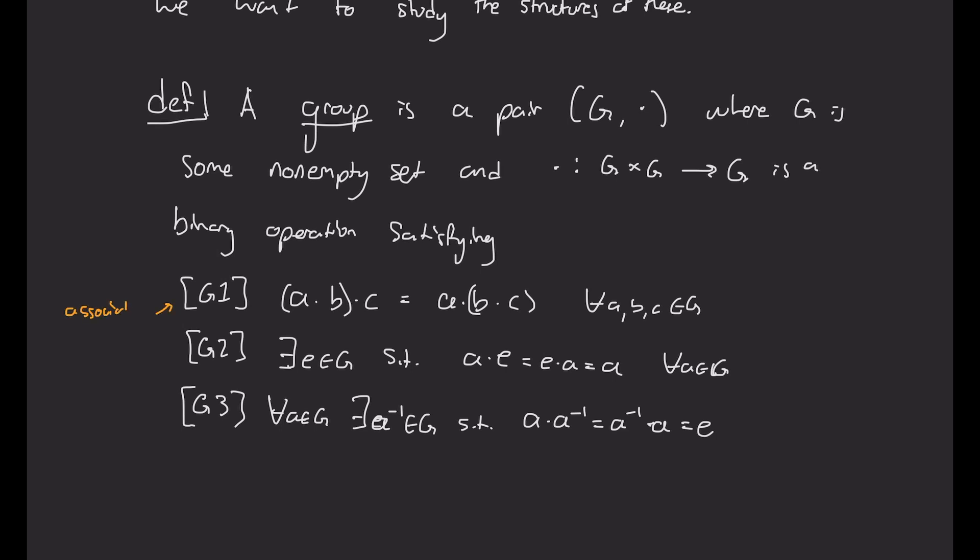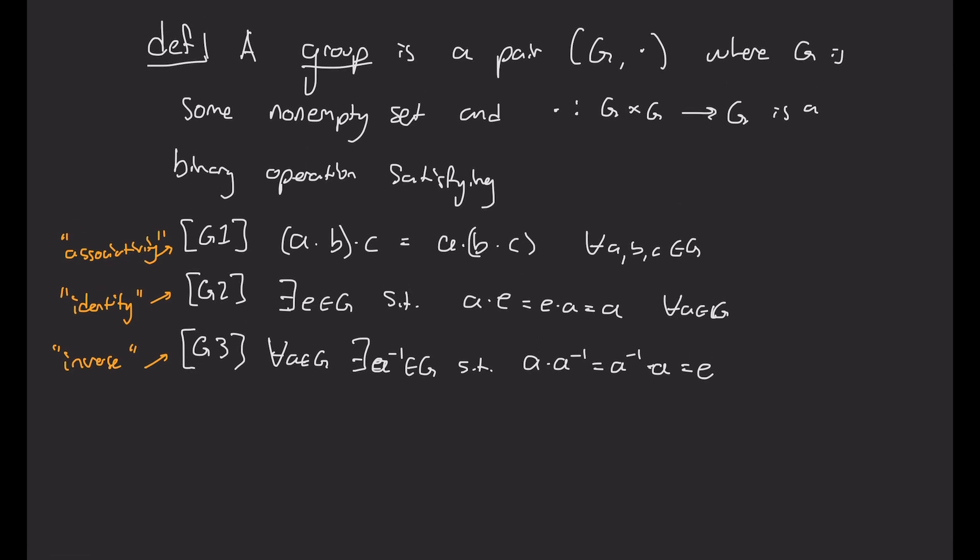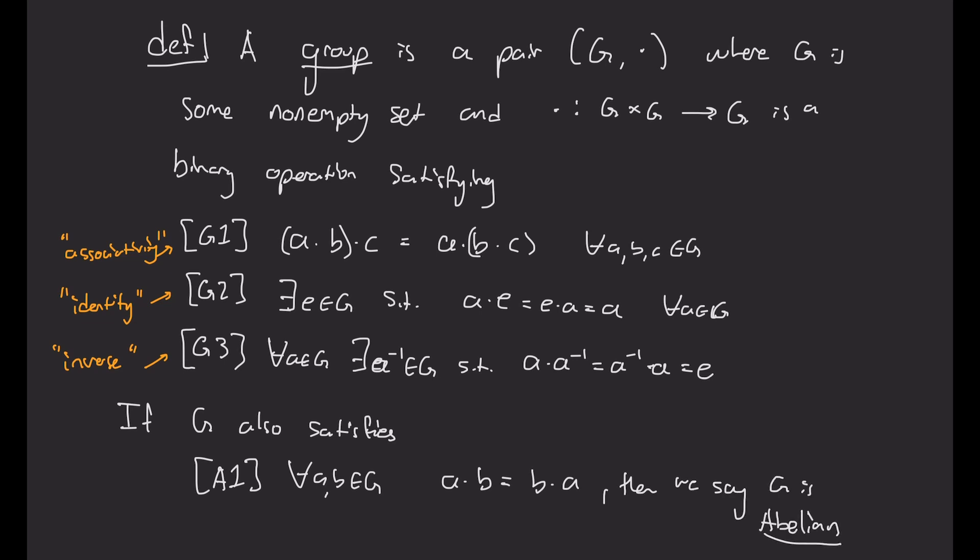So the first property is called associativity. It basically says it doesn't matter how we bracket our multiplications. The second one is called identity, and the third one is called inverse. So if we have these three properties, we have a group. And one last property that we'll encounter a lot is if we also have commutativity of the multiplication. So if G also satisfies that for any A, B, and G, their product of A times B is equal to B times A, then it's commutative, but we give it a name. We call it an abelian group, and this is named after a mathematician named Abel.